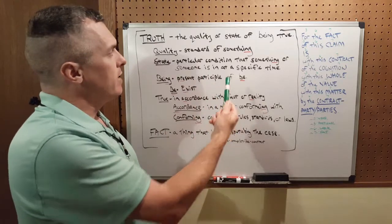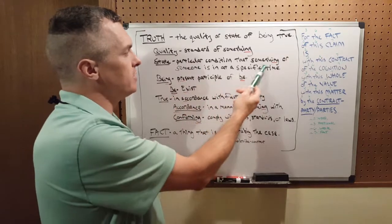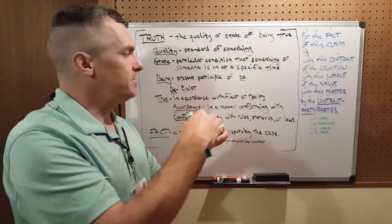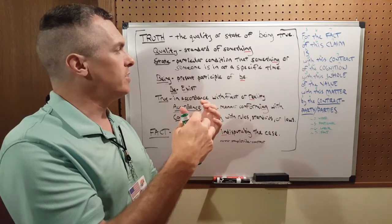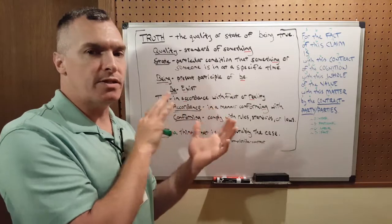I comprehend that. The next key word is state. What is a state? A state is a particular condition that something or someone is in at a specific time. So it's a state or condition that something or someone is in at a specific time location.